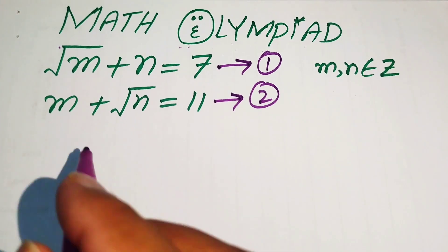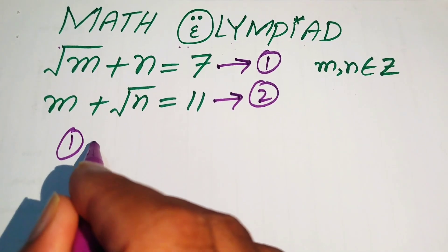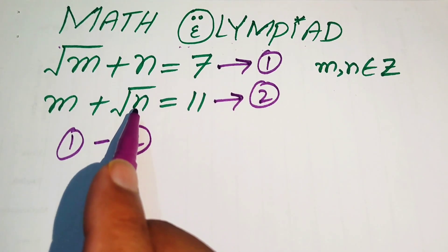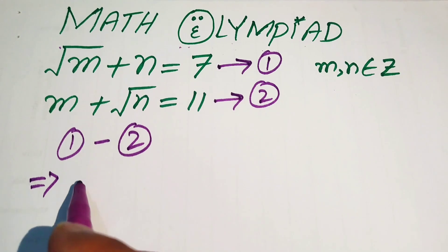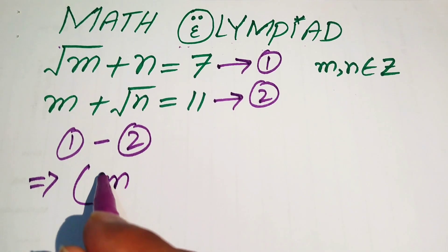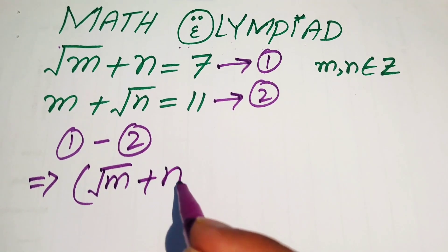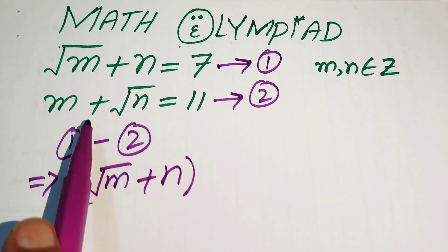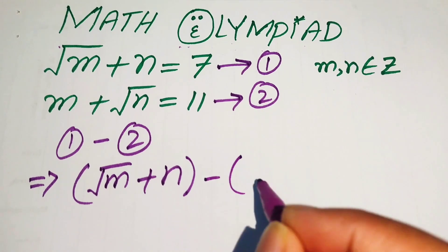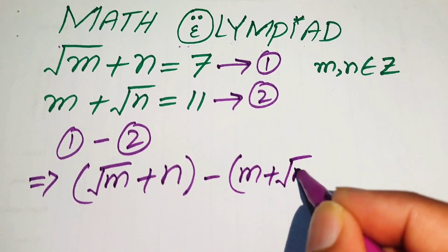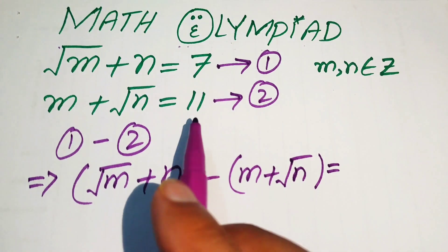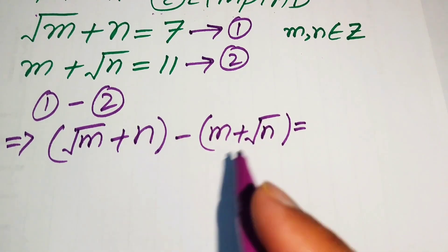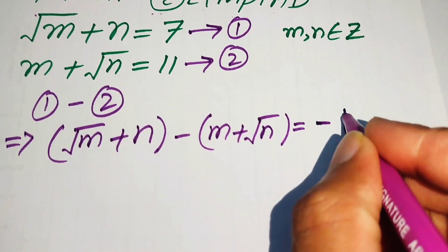In the next step, we subtract equation number 2 from equation number 1. The left-hand side is subtracted from the left-hand side, and the right-hand side from the right-hand side. So square root of (m plus n) minus (m plus square root of n) equals 7 minus 11, which equals minus 4.